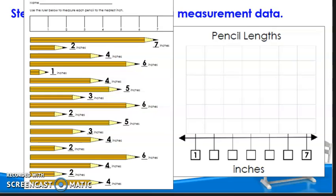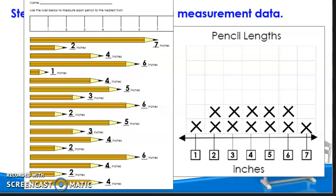Students fill in the rest of the numbers between 1 and 7, and then place one X for each pencil measurement. The first pencil measured 7 inches, then 2 inches, 4 inches, 6 inches, and so on until the line plot is complete with all measurements.